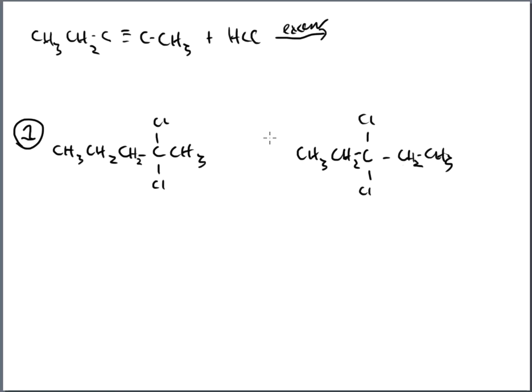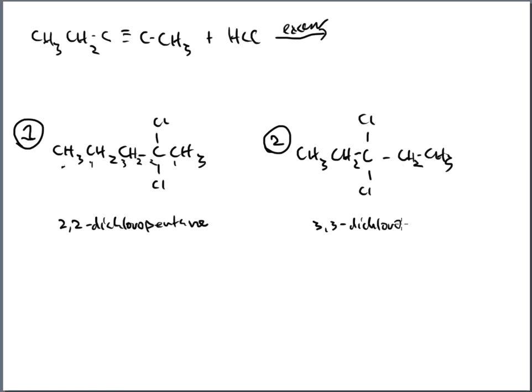Are these different? Yes. Name them to confirm: both are pentanes. Choice one — numbering from the right gives 2,2-dichloropentane. Choice two — the chlorines are at carbon 3, giving 3,3-dichloropentane. They are indeed different compounds.